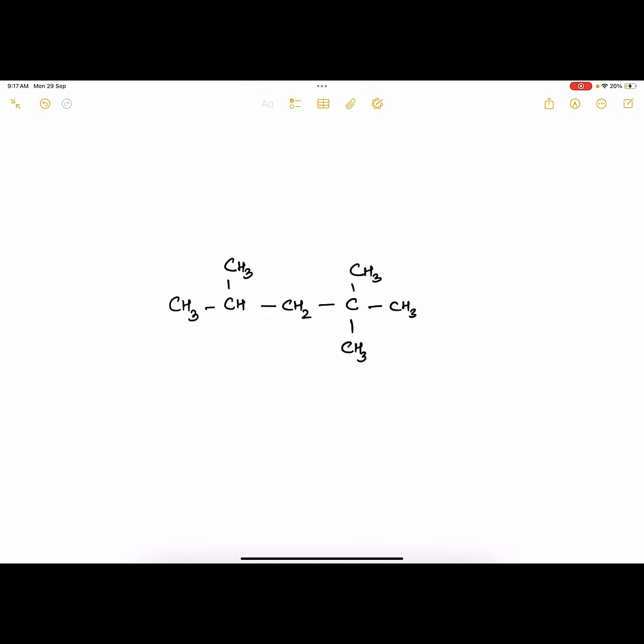Now find the parent chain for this compound. The parent chain is this, which has five carbon atoms, so it's a pentane.